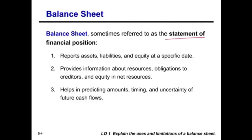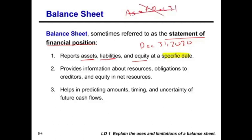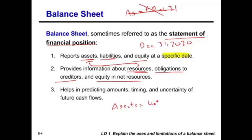The balance sheet, sometimes referred to as the statement of financial position, can be called either name. It reports assets, liabilities, and equities at a specified point in time. When you look at the date of the balance sheet, it's going to be one single date such as December 31st, 2020 or any year. It provides information about the resources — the assets — obligations to creditors, and equity.